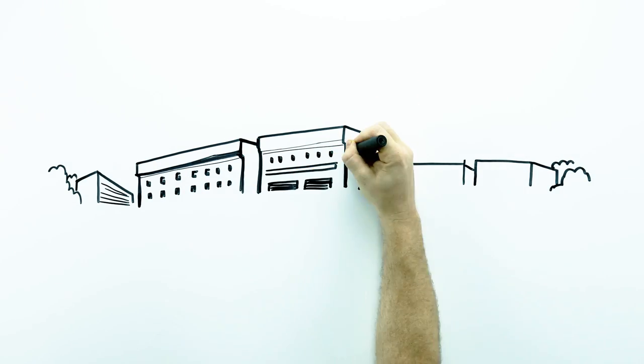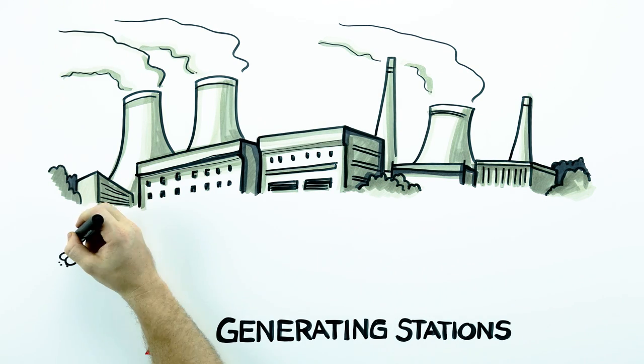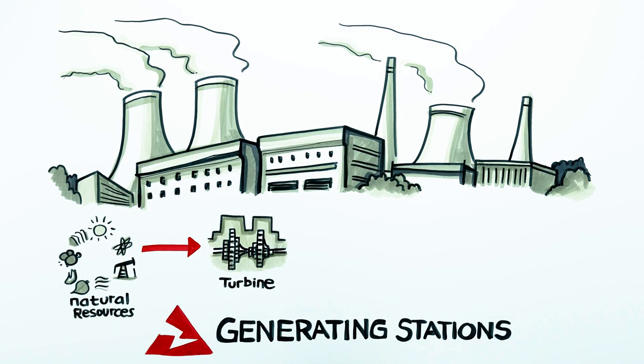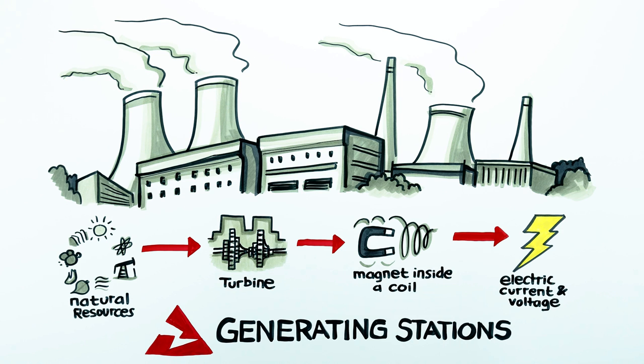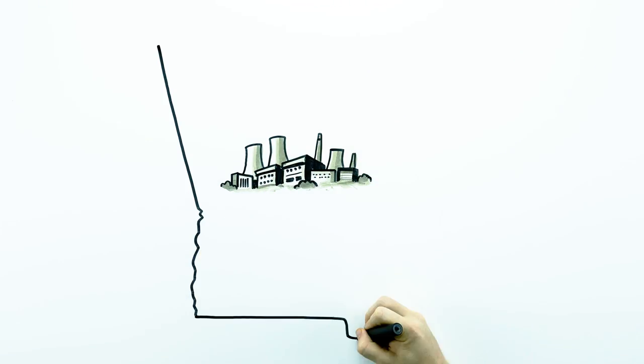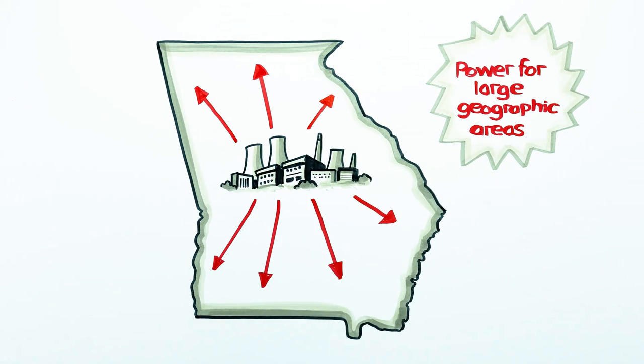These natural resources are first converted to electricity at large central generating stations through processes that turn a turbine, which turns a magnet inside a coil, which generates electric current and voltage. These generating stations provide power for large geographic areas.